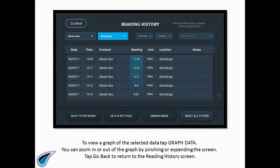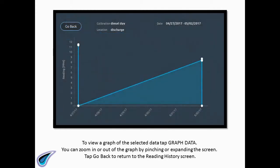To view a graph of the selected data, tap Graph Data. You can zoom in or out of the graph by pinching or expanding the screen. Tap Go Back to return to the Reading History screen.